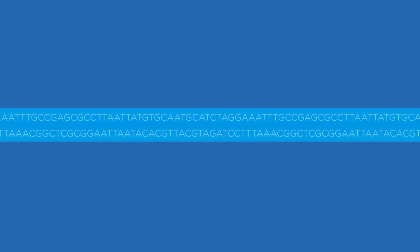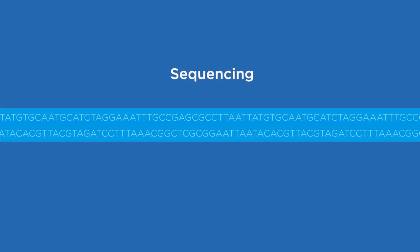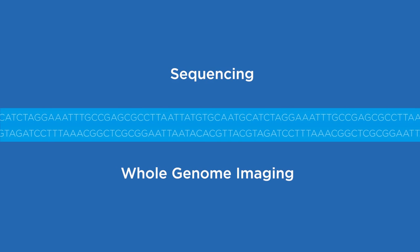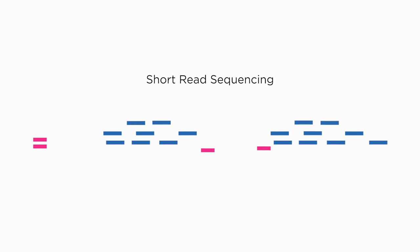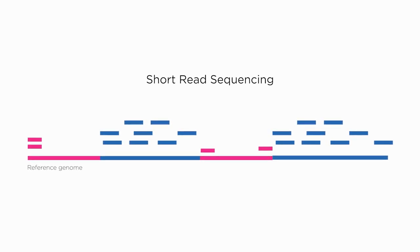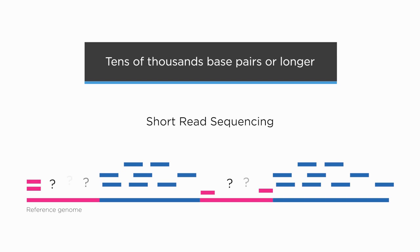To do this, there are two fundamentally different yet complementary approaches: sequencing and whole genome imaging. In short-read sequencing, or next-generation sequencing, DNA is read in short segments of about 150 base pairs, and the read sequences are compared to a reference genome. It can characterize small variants, but structural variants are often tens of thousands of base pairs or longer, so short-read sequencing is not an accurate way of calling them.